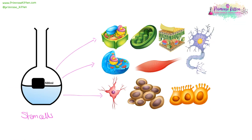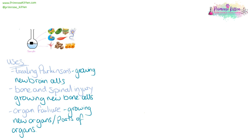Stem cells are fantastic things because they have the potential to turn into any other type of cell. They have a number of different uses. For example, if you are treating Parkinson's disease, they can be used to grow new brain cells. For brain or spinal injury or bone injuries, they can be used to grow new bones to fill the gap. If we have organ failure, we can grow new organs or parts of organs, instead of making someone wait on the incredibly long transplant waiting list.